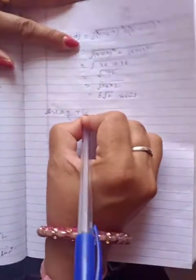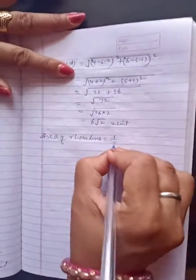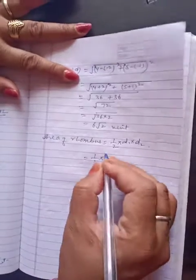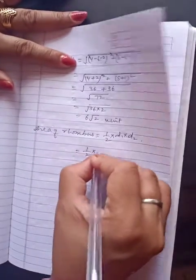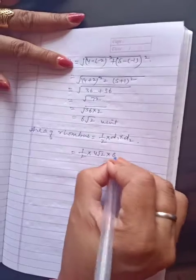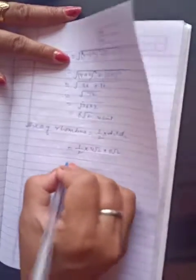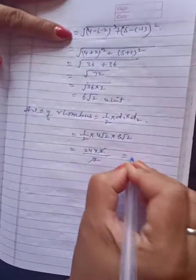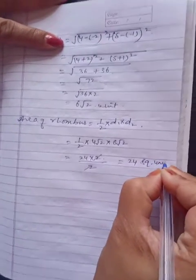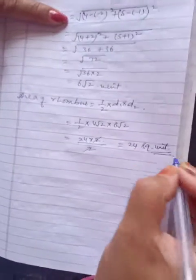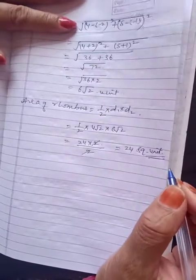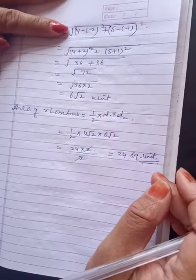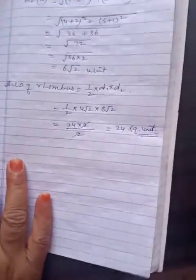Now area of rhombus = 1/2 × D1 × D2. यह formula given है। 1/2 into 4√2 into 6√2 = 1/2 into 24 into 2 = 24 square units. Square क्यों? क्योंकि area की unit square होती है। That is the answer. Is that clear? इस question को एक बार घर पे भी solve करके देखें।